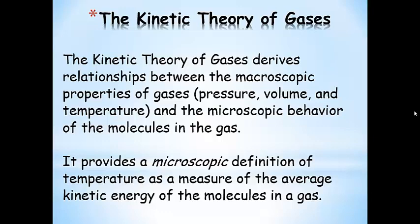The kinetic theory of gases derives relationships between pressure, volume, and temperature — macroscopic properties we can measure — and what individual molecules or a collection of molecules are doing, which is the microscopic behavior. Kinetic theory of gases provides a molecule-level definition of temperature as a measure of the kinetic energy of the gas molecules. That's a microscopic definition of temperature.